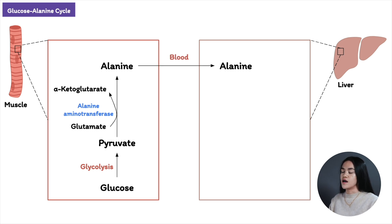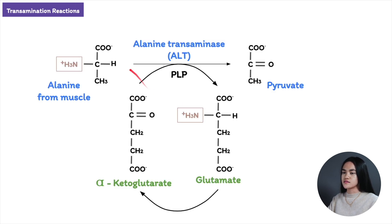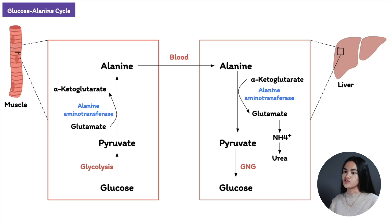Once alanine is produced, it travels into the blood and to the liver. In the cytosol of liver cells, the amino group from alanine is donated to alpha-ketoglutarate, producing pyruvate and glutamate, catalyzed again by alanine aminotransferase. So alanine transfers its amino group to alpha-ketoglutarate, forming pyruvate and glutamate. Pyruvate can then be converted back to glucose via gluconeogenesis. This is the glucose-alanine cycle.